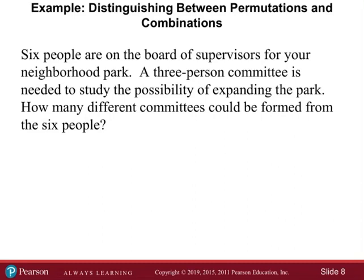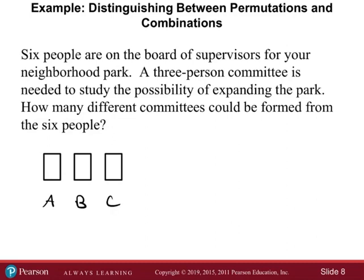Next example: six people on the board of supervisors for your neighborhood park. A three-person committee is needed to survey the possibility of expanding the park. How many different committees could be formed from the six people? Say we choose person A, person B, person C — that's one possible committee. If we rearrange the order to B-A-C, are these considered the same outcome or two different outcomes?